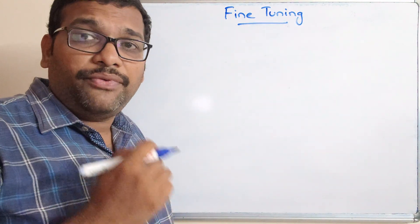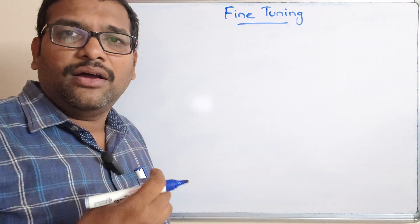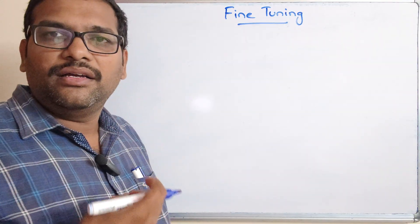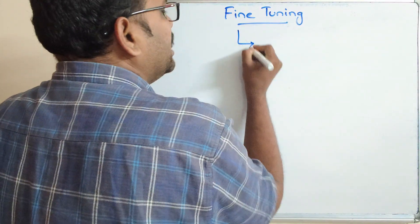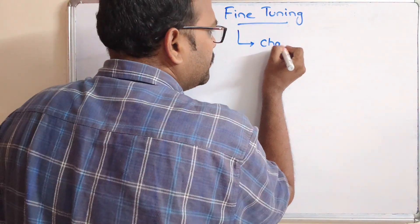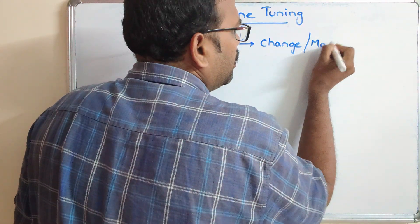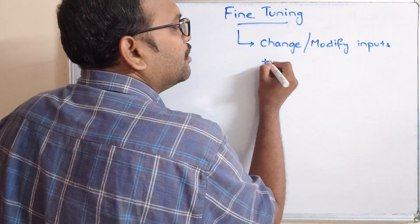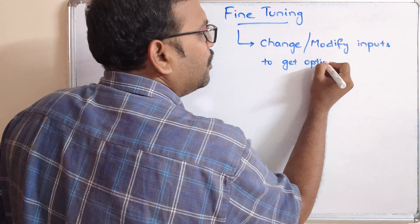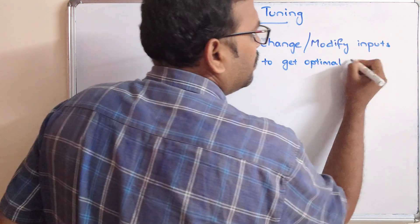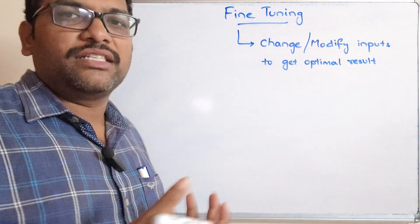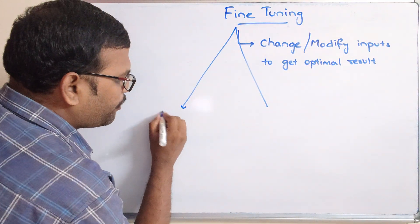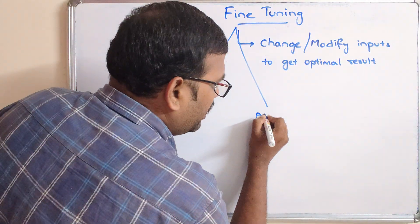What is fine tuning? Fine tuning means in order to get the optimal result, we'll be changing the prompts or we will be changing the inputs. This fine tuning generally means to change or modify inputs to get optimal results. This fine tuning can be done in two ways: one is on the prompt, and another one is on the AI model.